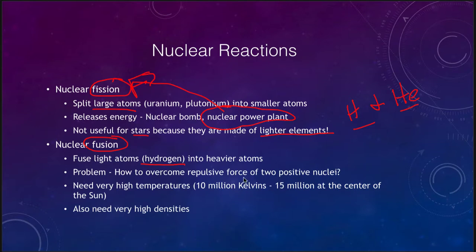The stars use nuclear fusion, which fuse the light atoms, in particular hydrogen, into heavier atoms. The problem is how do we overcome the repulsive force of two positive nuclei? If we have a hydrogen nucleus with a positive charge and another hydrogen nucleus with a positive charge moving towards each other, they will not keep moving towards each other, they're going to be pushed away by their electromagnetic force. How are they going to combine together?